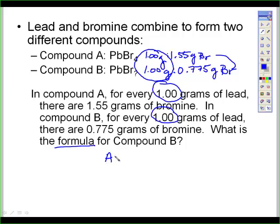So in compound A, we've got 1.55 grams of Br. In compound B, we've got 0.775 grams of Br. If I divide those two numbers, I find the number 2 exactly, or 2 to 1. So my ratio is 2 to 1 from compound A to B.